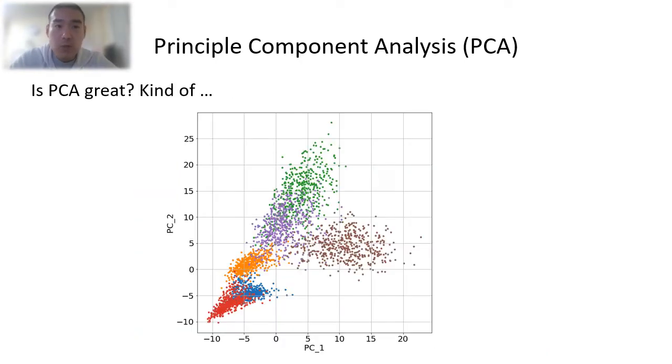So we have talked about PCA. Is it great? Well, one problem is PCA always tries to preserve the global structure of the data because we use all the data points for PCA. But it may not be good for visualization. As we can see here, the clusters are not spread out evenly. So what can we do?